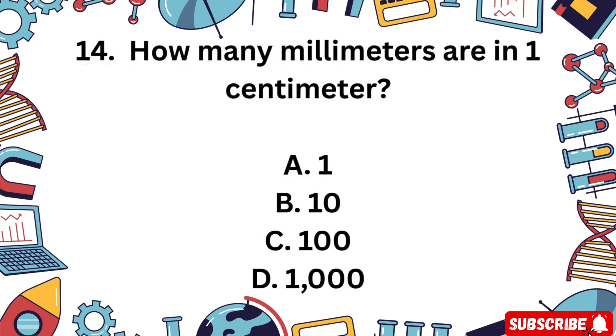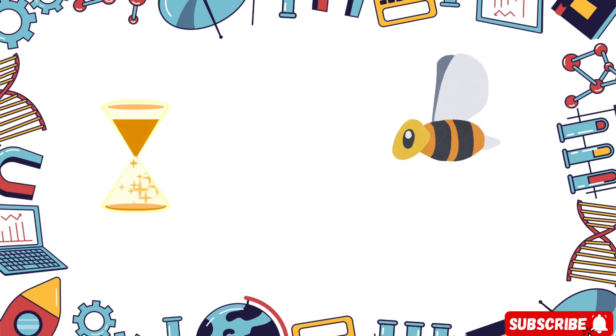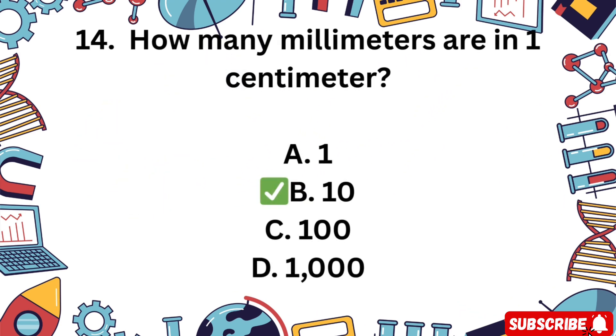Question 14. How many millimeters are in 1 centimeter? A 1, B 10, C 100, D 1000. Think about your metric units. Ready? 5 seconds. The correct answer is B 10. There are 10 millimeters in 1 centimeter.